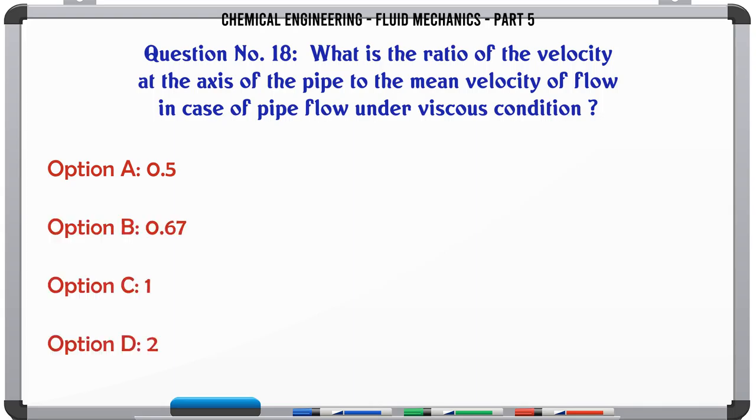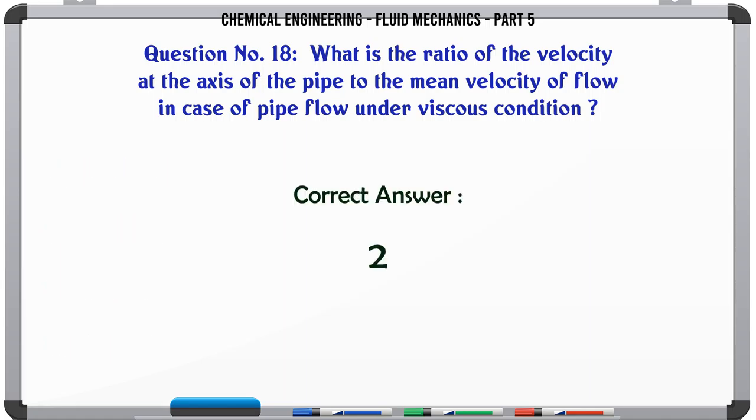What is the ratio of the velocity at the axis of the pipe to the mean velocity of flow in case of pipe flow under viscous condition? a) 0.5, b) 0.67, c) 1, d) 2. The correct answer is 2.